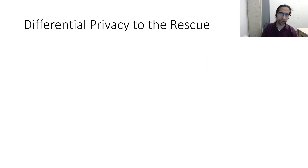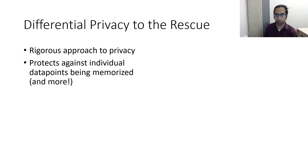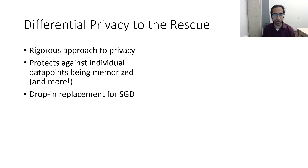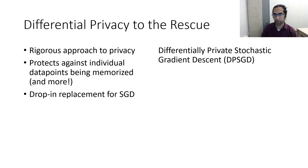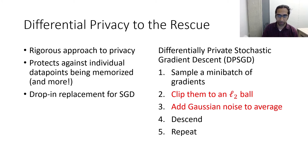A common solution is known as differential privacy. Without getting into the full definition, it's a rigorous approach to data privacy that protects against individual data points being memorized. There is a differentially private algorithm called DPSGD which serves as a drop-in replacement for SGD. It's essentially the same as SGD except we clip the gradients and then add Gaussian noise to their average. This perturbation hides the contribution of individual data points and can be used to train a model privately.